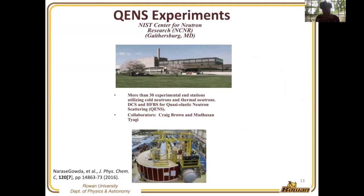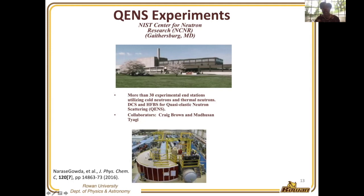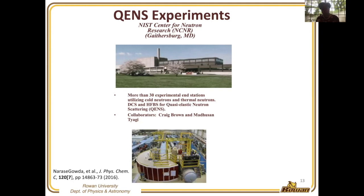We went to the National Institute of Standards and Technology Center for Neutron Research, the NCNR, to carry out our experiments. That facility has two instruments that can measure quasi-elastic neutron scattering: the disk chopper instruments and the high flux backscatter instrument. They differ in temperature range and dynamics; the HFBS instrument is better for lower temperature and slower dynamic systems. The collaborators there were Craig Brown and Madhu Tayagi, and information about additional publications on the instrumentation can be found through them.